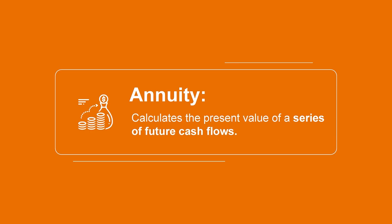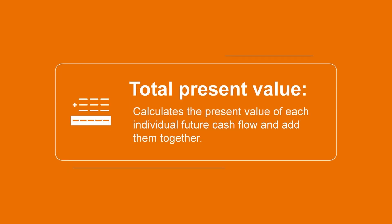When companies are making investment decisions, such as deciding whether to buy a new piece of equipment, they may need to calculate the present value of a series of future cash flows, called an annuity. There can also be one-time single cash flows that take place during the useful life of the asset. In this case, they would need to calculate the present value of each individual future cash flow and then add them together to get the total present value of the cash flows expected from the investment.